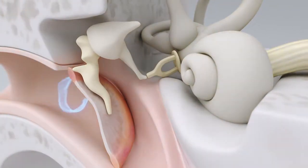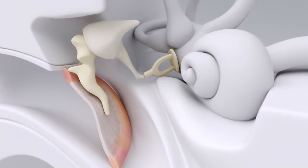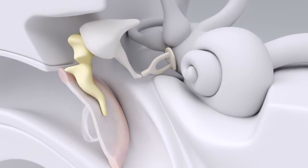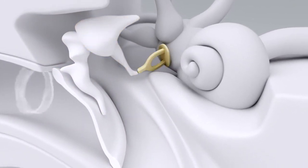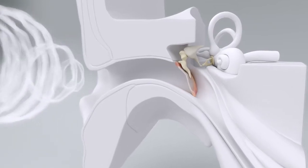In the middle ear are three tiny bones, referred to as the hammer, the anvil, and the stirrup. Collectively they are known as the ossicular chain.